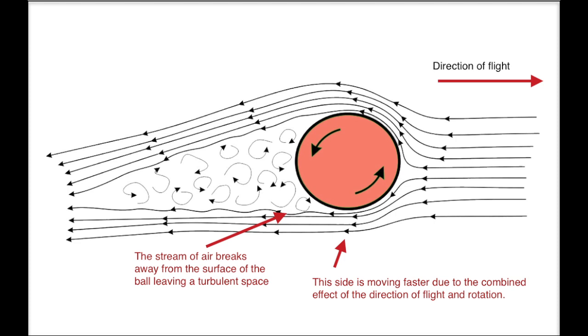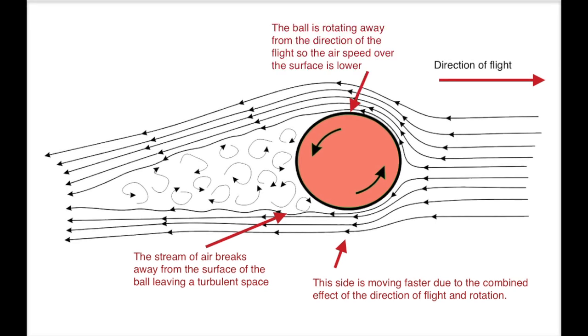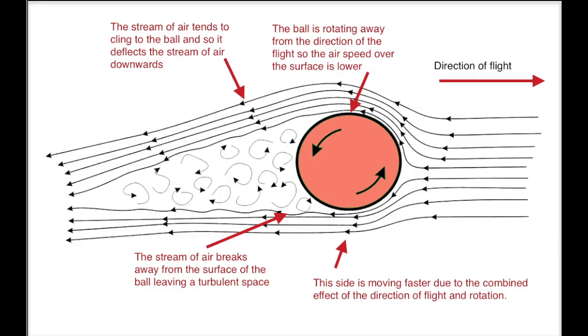The top edge of the ball is revolving away from the direction of movement, so that surface of the ball is moving relative to the air more slowly. The stream of the air on that side of the ball or tube therefore clings to the surface rather more and because of that it's deflected slightly downwards.